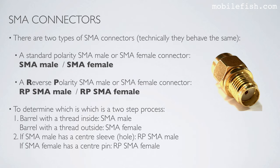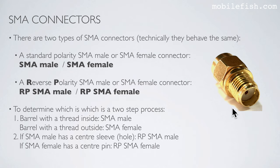To determine which is which is a two-step process. First, look at the barrel. If the barrel has a thread on the inside, it is called SMA male. If the barrel has a thread on the outside, it is called SMA female. Then the second step is to look at the center. If it is an SMA female and it has a sleeve — meaning a hole — then this connector is called SMA female. If the SMA female has a pin, then this connector is called RP SMA female.